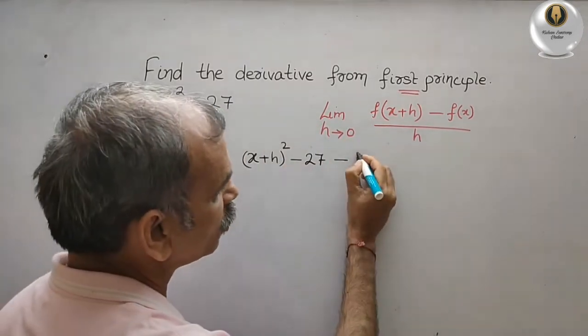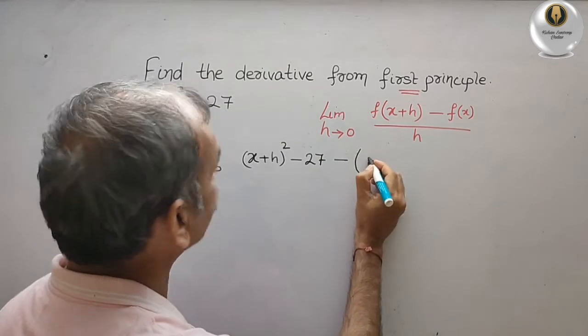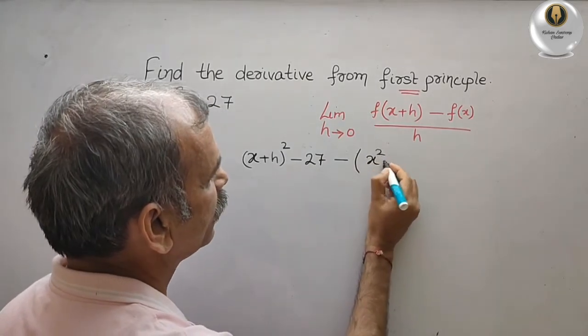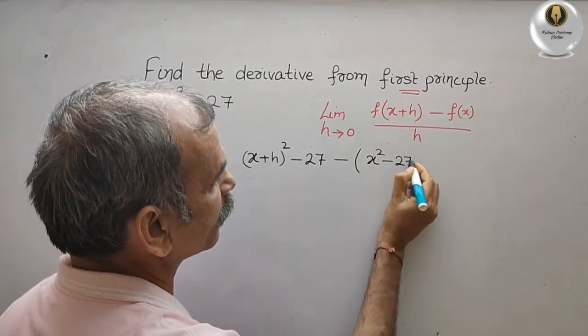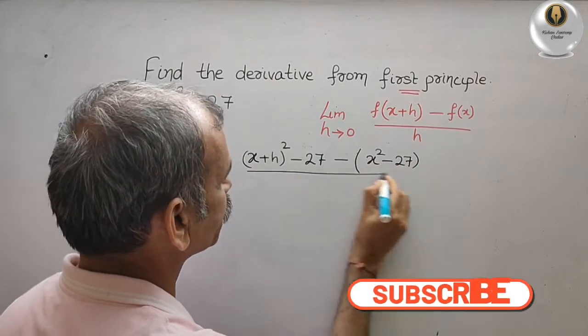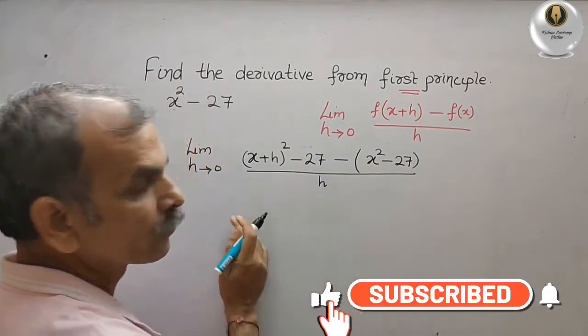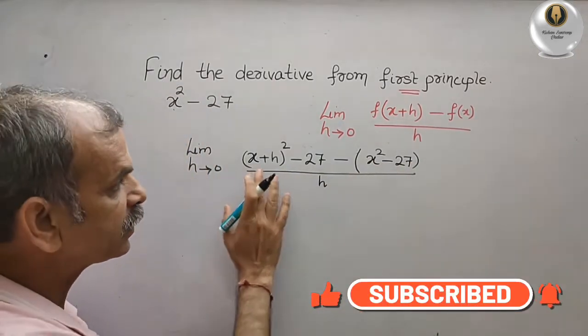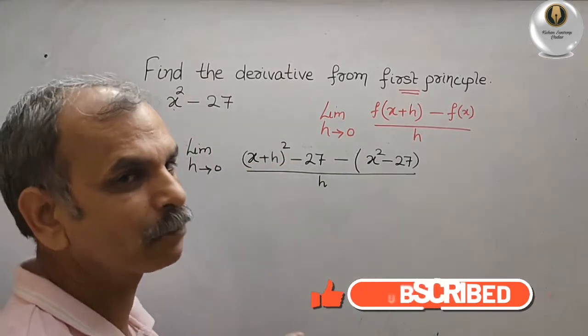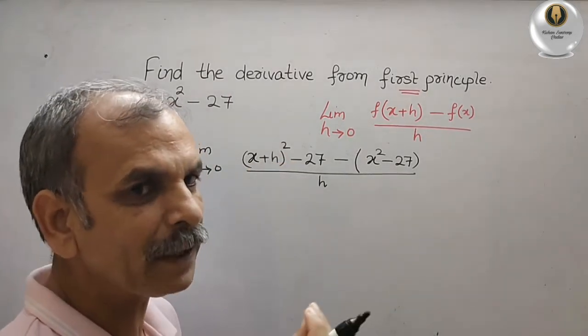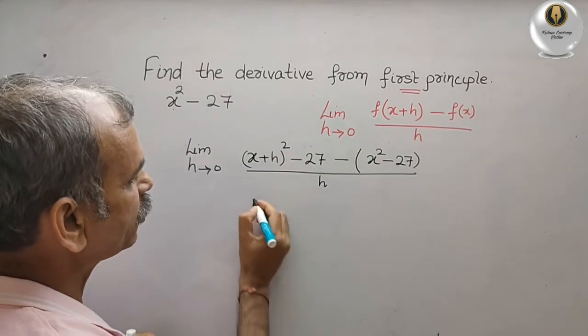So this is in bracket, it is your x squared minus 27, divided by h. What is this? Just substitute: x plus h whole squared. That means a plus b whole squared, that is equal to x squared plus h squared plus 2xh minus 27.